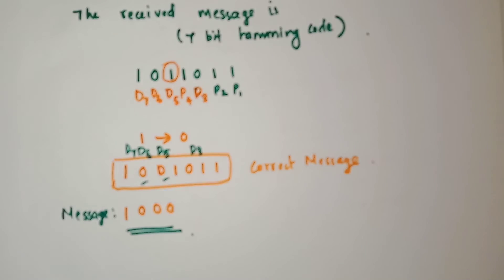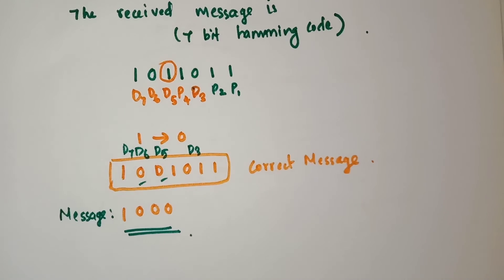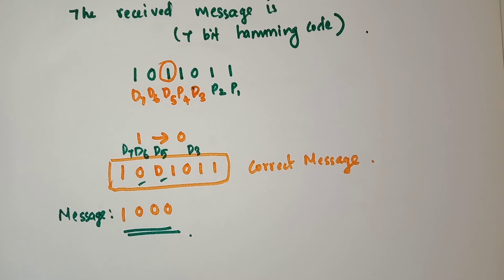This is one of the important topics in data communication. Using Hamming code, we can detect and correct the message. Other remaining error detection methods can only detect the error — they cannot find which position contains the error. But with Hamming code, we can detect the error, find exactly which position contains the error, and determine the correct value. This is a very easy and important topic. Do practice and make it clear. I hope you understand this topic. Please like my video, subscribe to my channel, and share with your friends. Thank you.